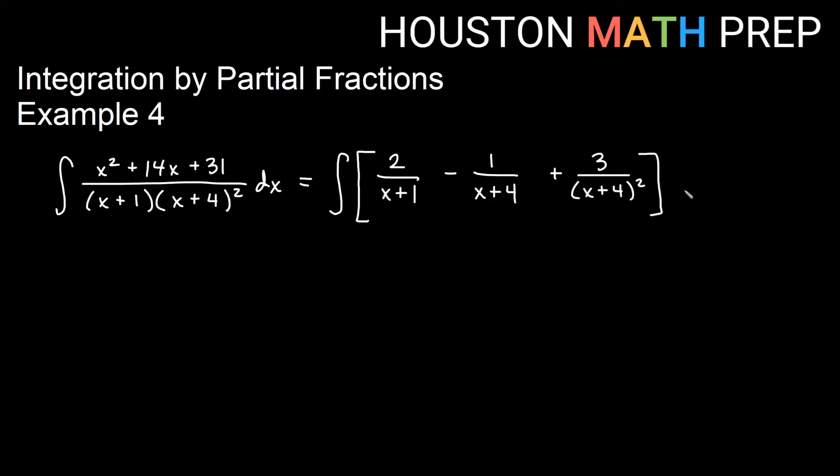Now we just want to use these partial fractions to complete this integral. For each of these, we're going to choose u to be the factor itself. So u is going to be x plus 1, and du is going to be dx for the first one. If we pull the 2 out, this becomes 2 integral of du over u, which gives us 2 times ln of absolute value of u. In this case, u is x plus 1.